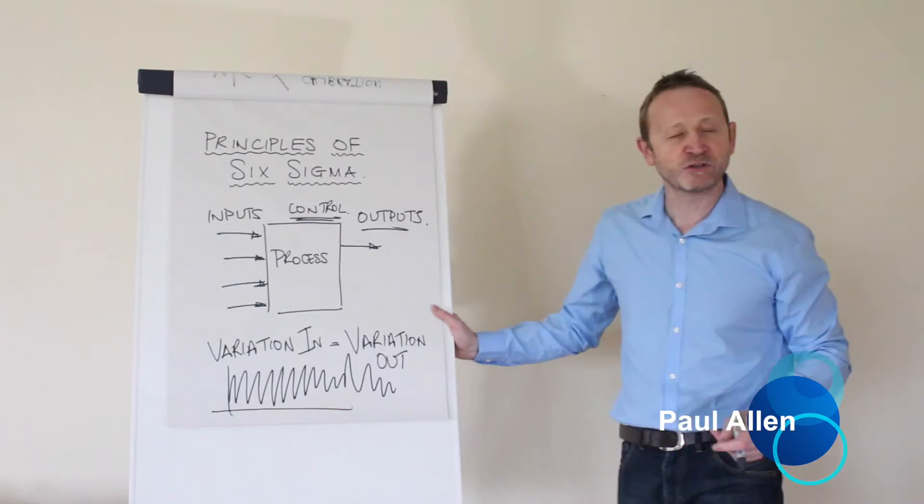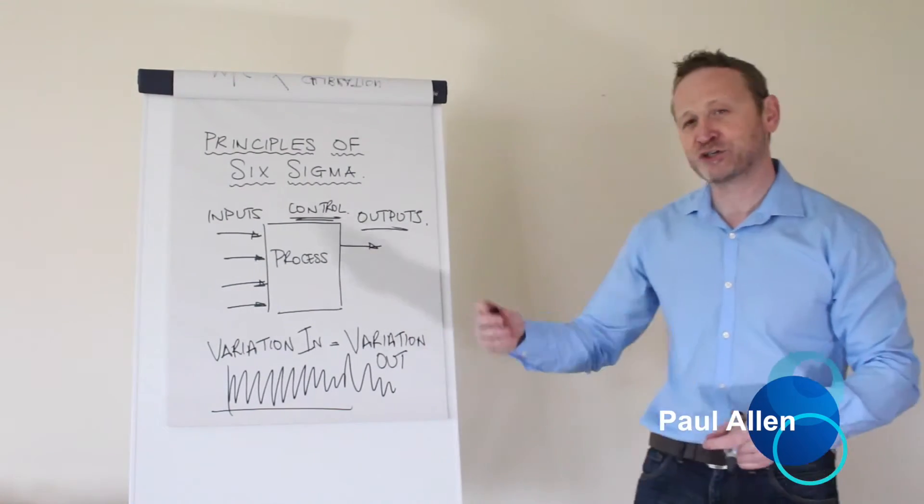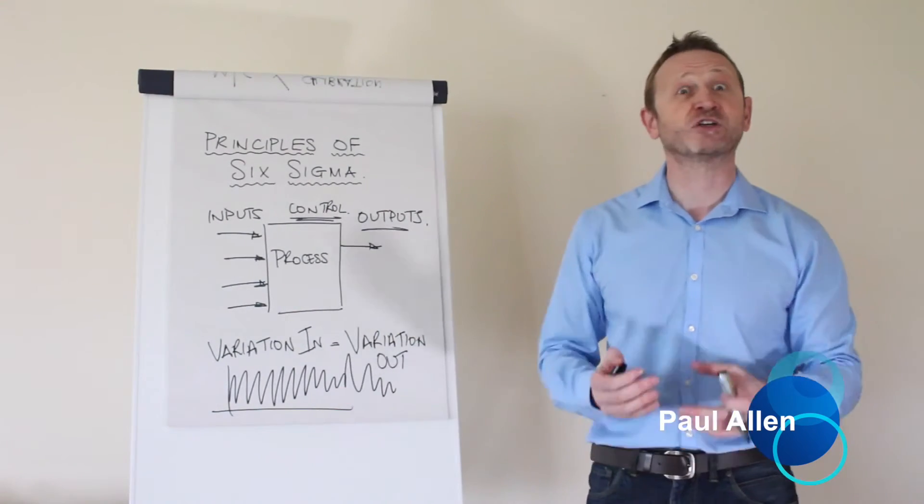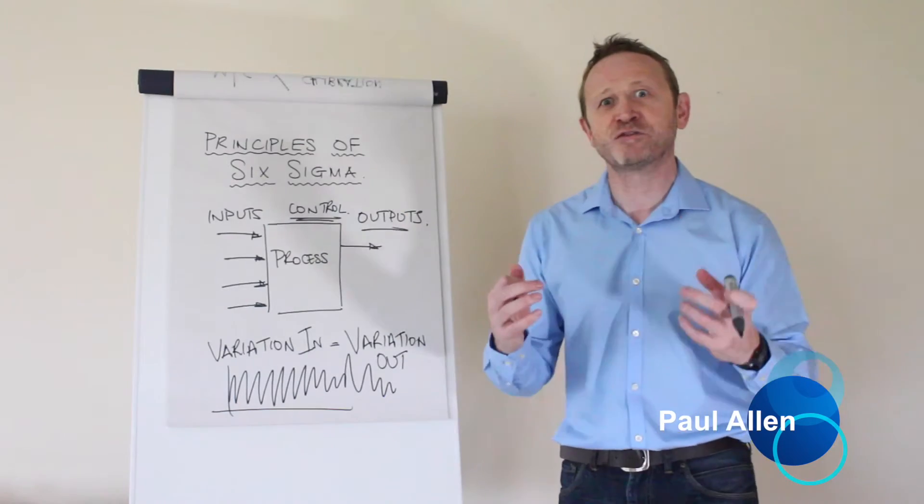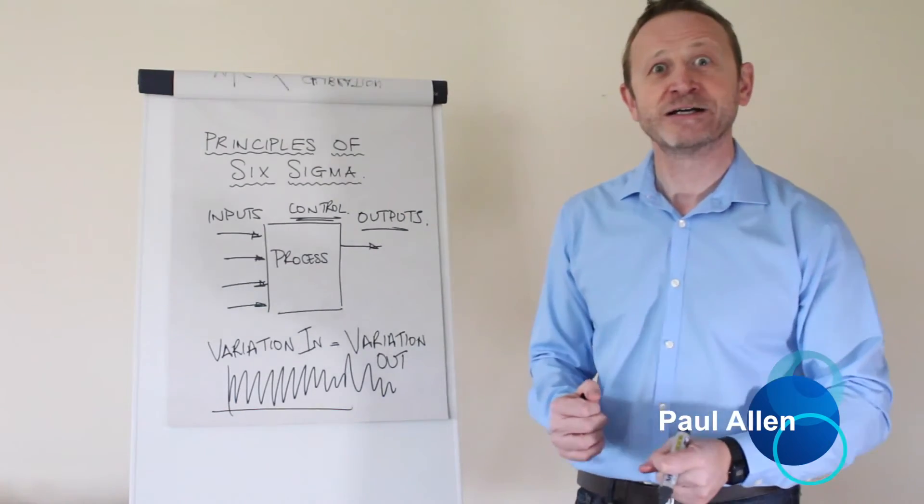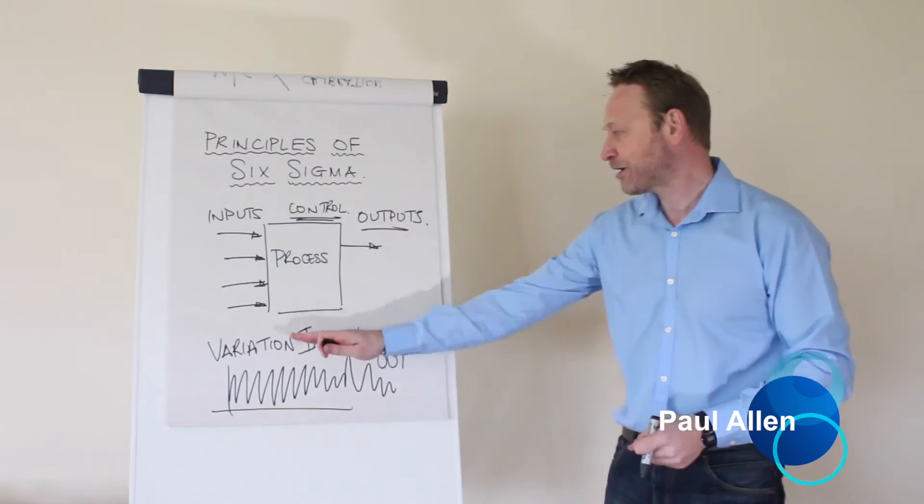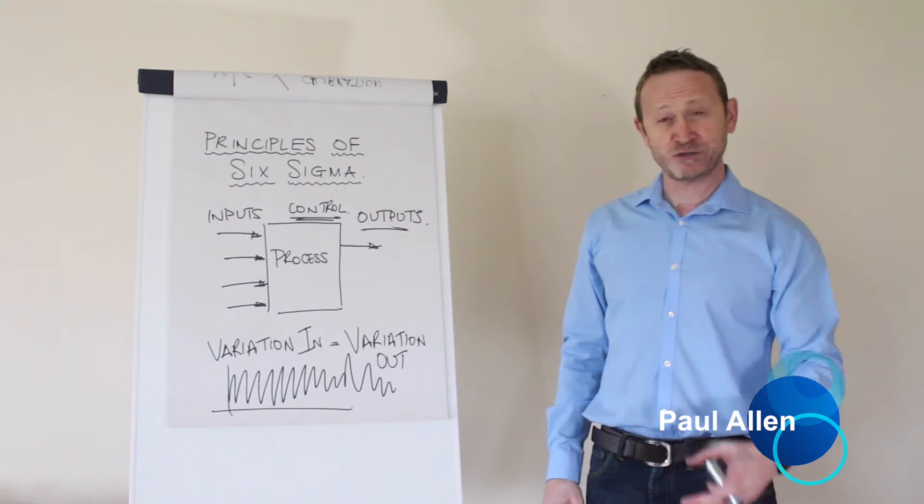This kind of performance that you get from a process. Take a look at your graphs. Do you see graphs that look chaotic, that just move around in a dramatic fashion? Inputs control outputs. Variation in equals variation out.